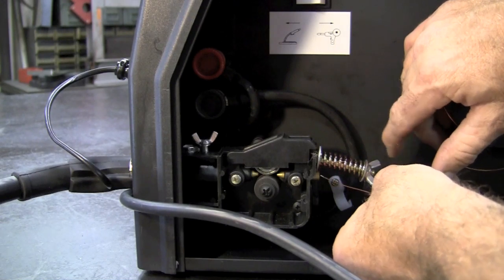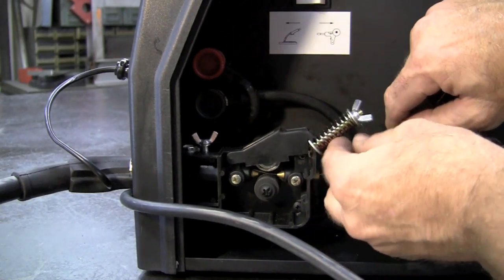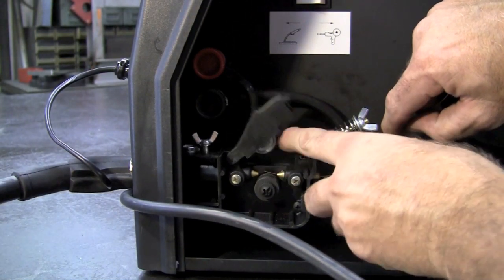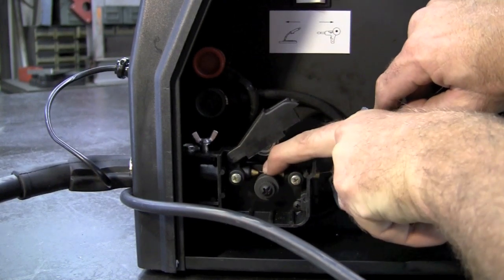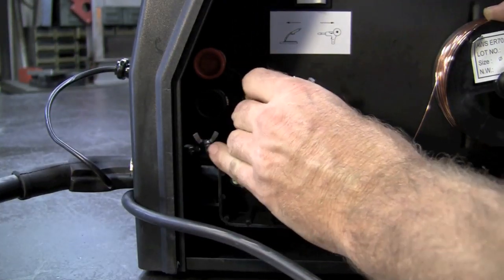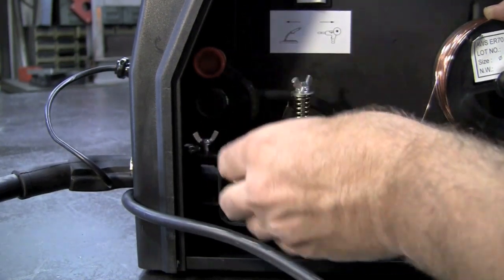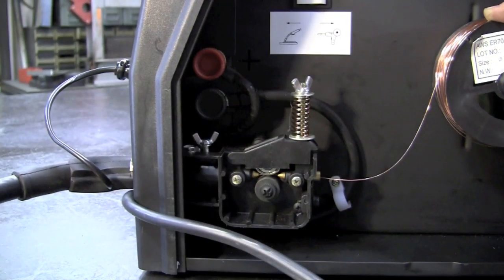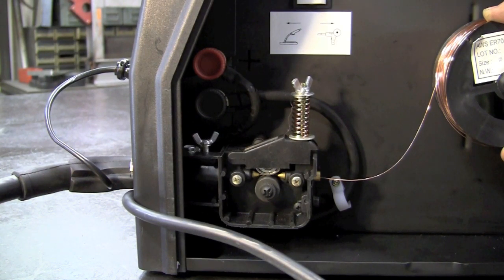We'll feed it down here through the hole, down past the drive roller. You have to use a finger to kind of get it down in this hole. Give it a twist, just make sure it's putting enough pressure on that. Then we'll plug the machine in, turn it on, and feed the wire through the gun.